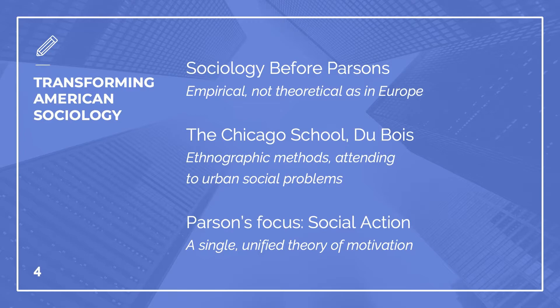Parsons' systematic study of social action represented a significant change of course for American sociology in the 1930s. To this point, American sociology had been very empirically focused. Under the influence of the Chicago School — namely Robert Park and Ernest Burgess — American sociology was aimed at the interpretive study of relatively small cases. The goals were to give small-scale accounts of social dynamics, and not to general theorizing.